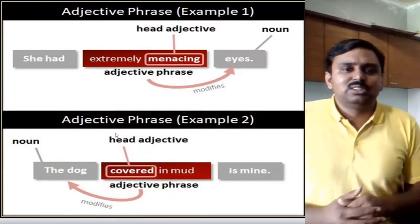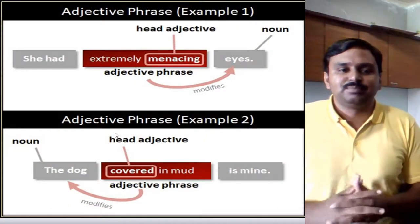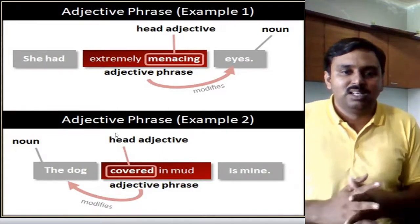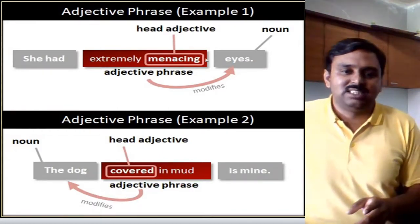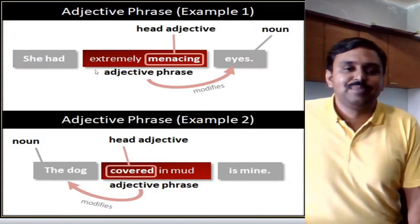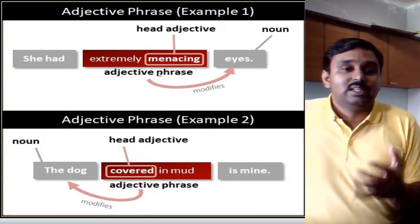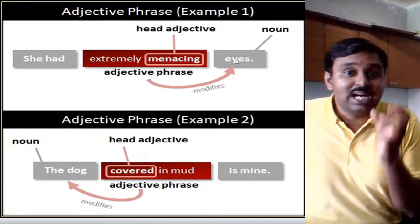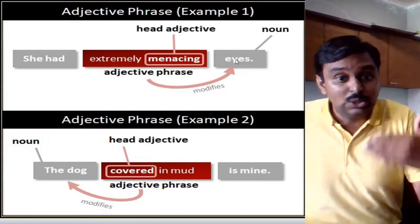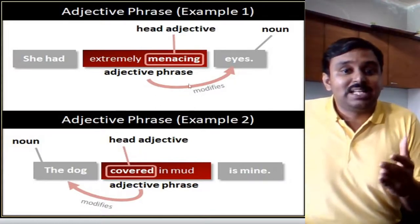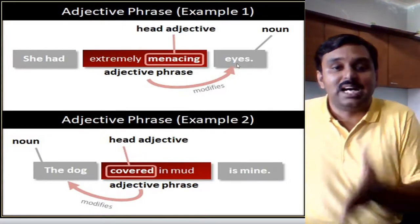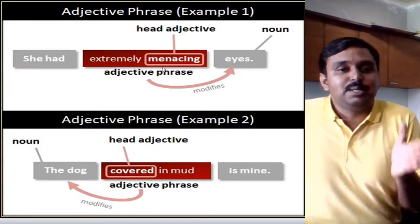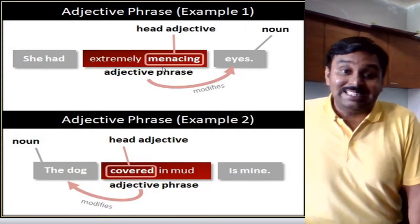One more example of adjective phrase: 'She had extremely menacing eyes.' Now menacing means very dangerous and dreadful. So 'extremely menacing' is describing the eyes — how the eyes look for the girl and how they are appearing. This adjective phrase is modifying the noun 'eyes,' and due to that reason 'extremely menacing' is the adjective phrase.